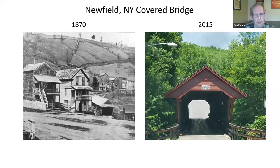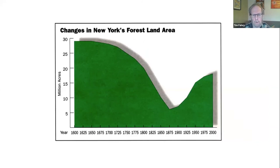One picture is worth a thousand words. This is a picture from Newfield, New York, just south of Ithaca, taken in 1870 — you can see the covered bridge in the lower right. All the hillsides are completely deforested. Go to the same location in 2015, there's that same bridge, and there are trees everywhere.